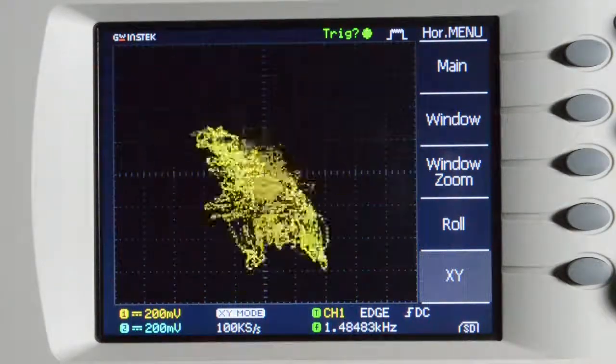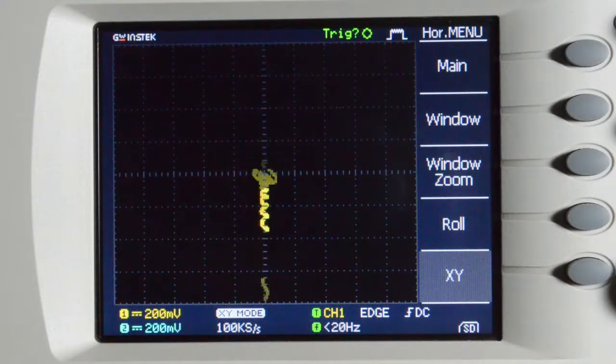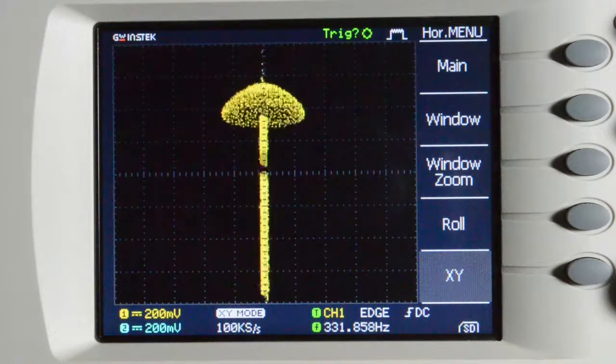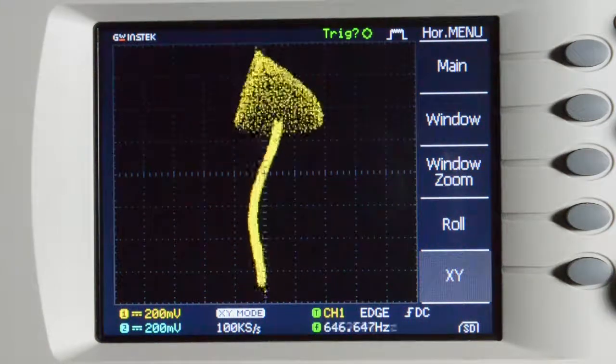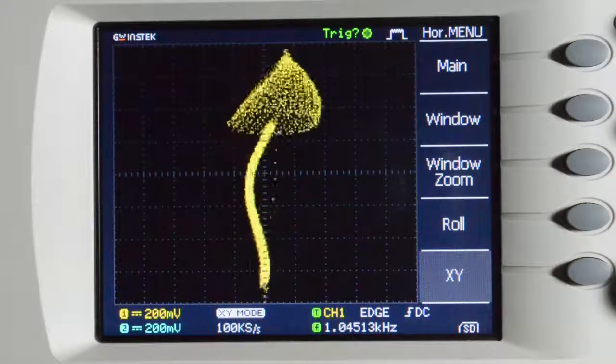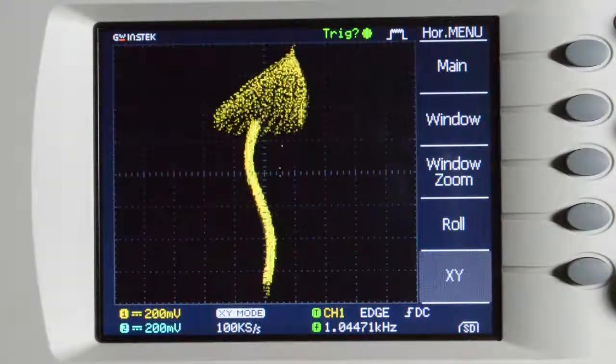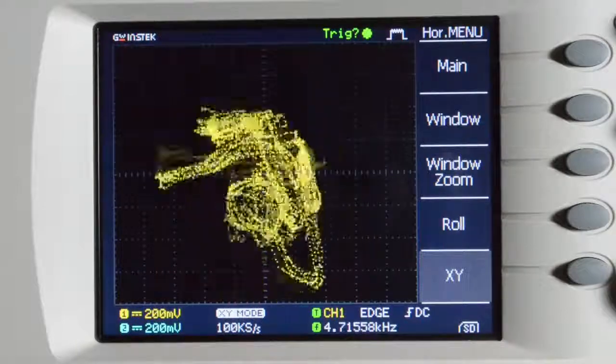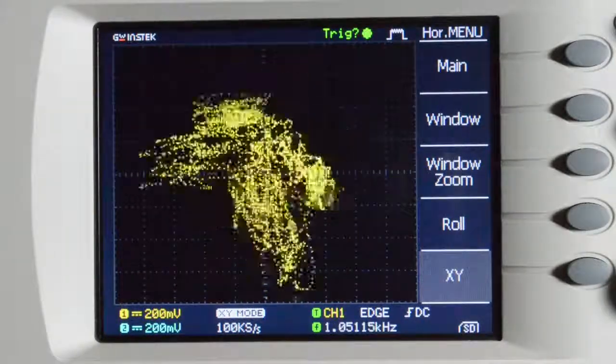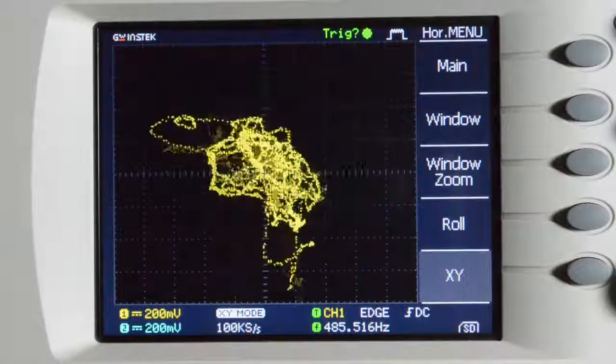Of course we want our mushroom to move, just like in real life. That's why we now add another sawtooth, multiplied with a cosine wave of a slightly different frequency to our left channel.